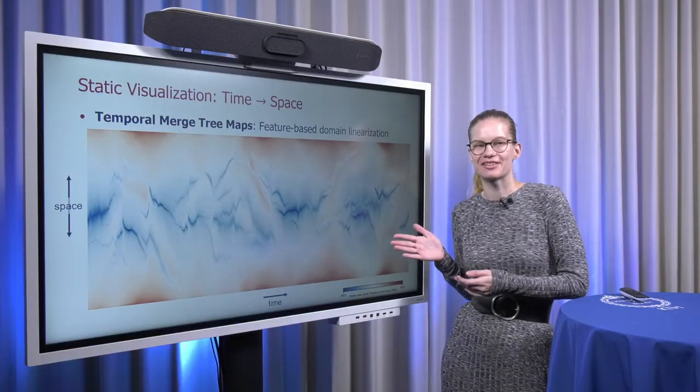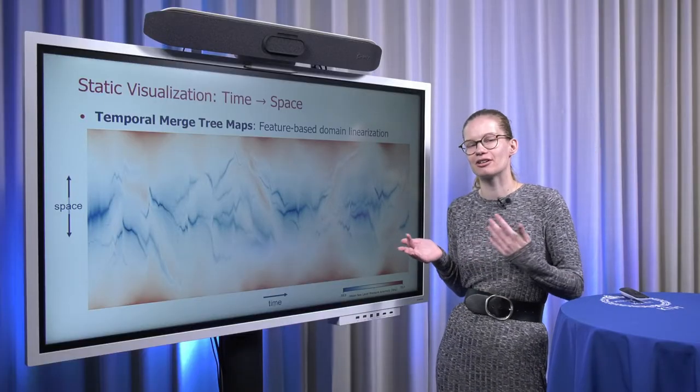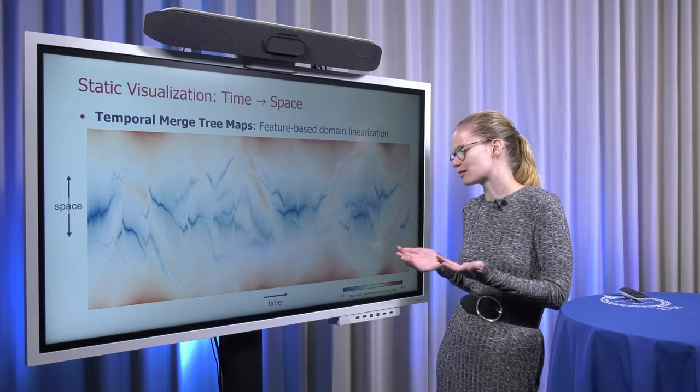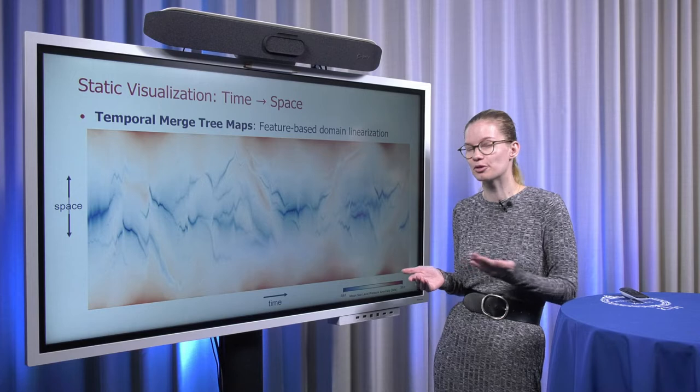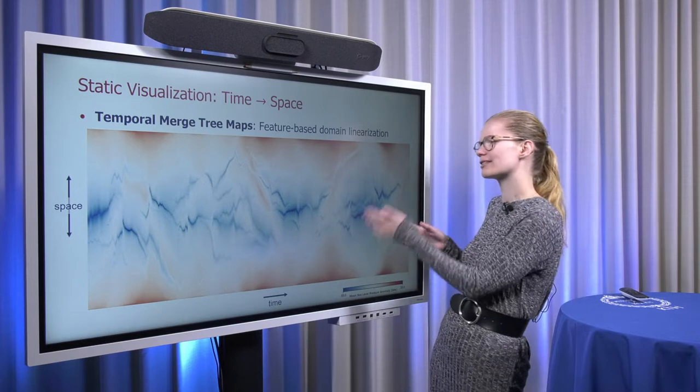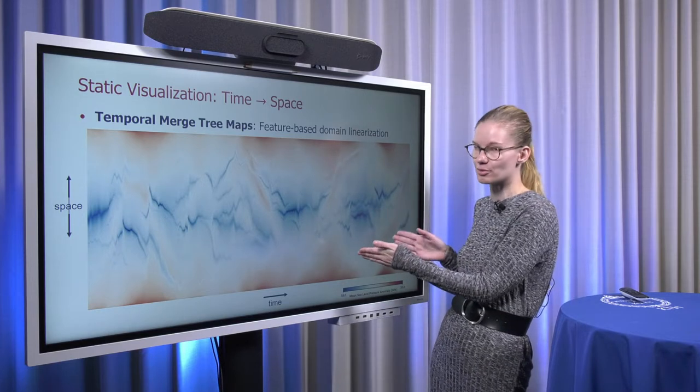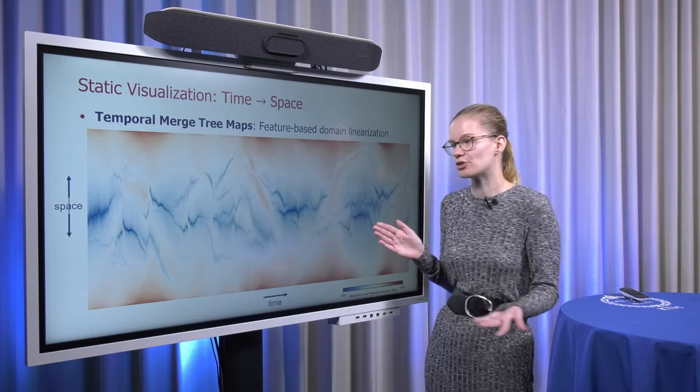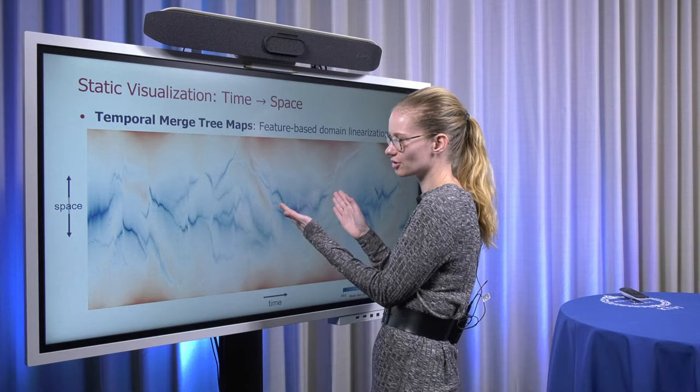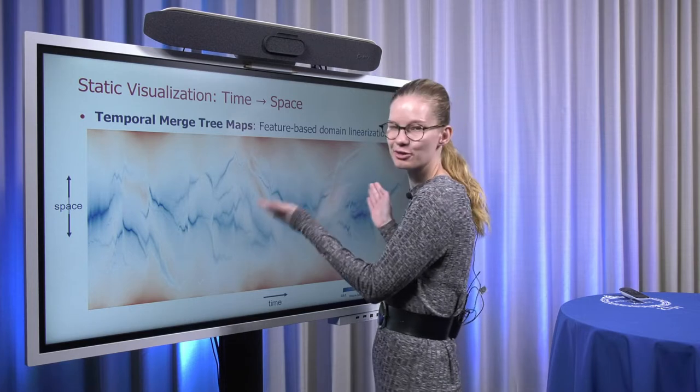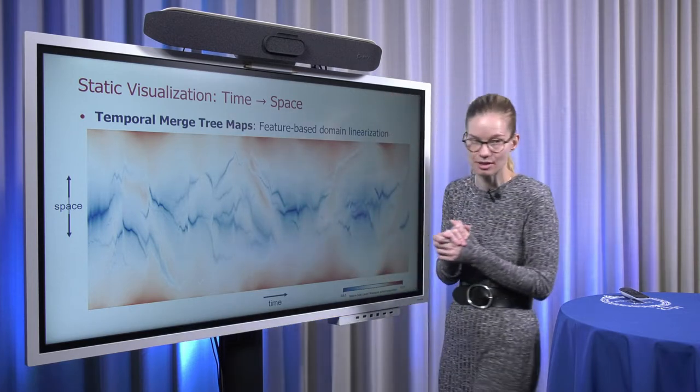With this kind of visualization, the questions that I asked earlier are a lot simpler to answer. For example, for a time period that covers almost all of Europe with a low pressure anomaly, we can see that that happens more towards the end of the period covered. For feature length, we can estimate how long a single feature persists simply by looking at when it starts and when it stops in the time frame.